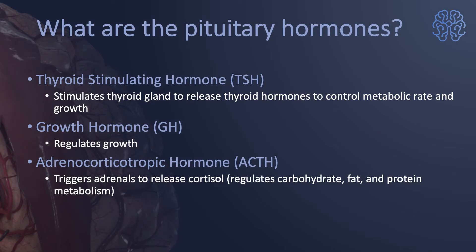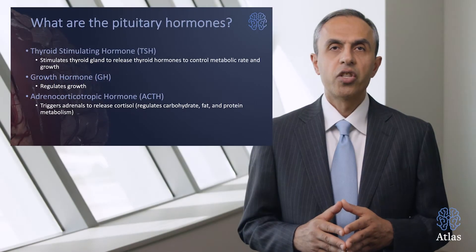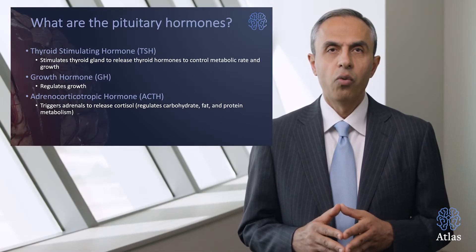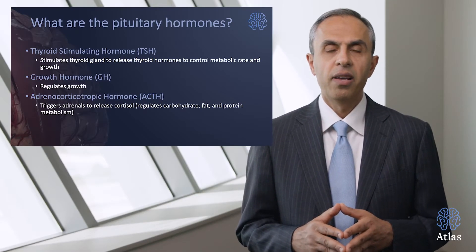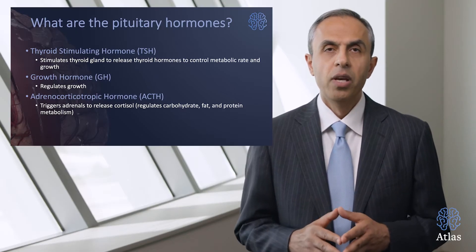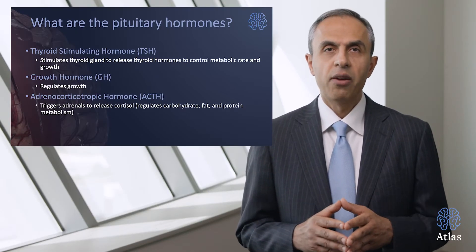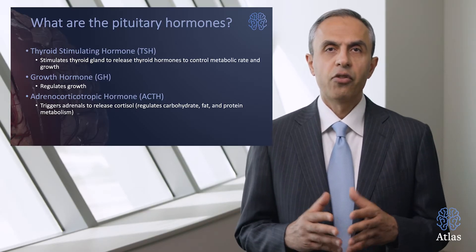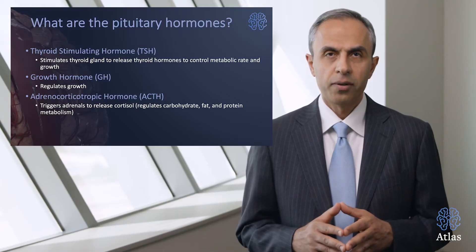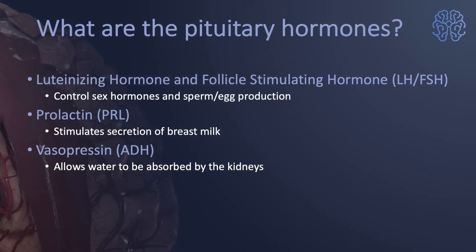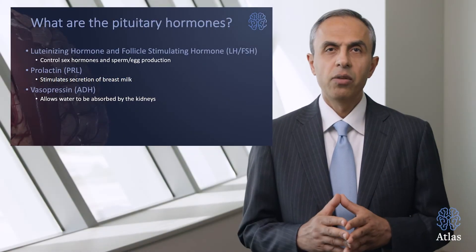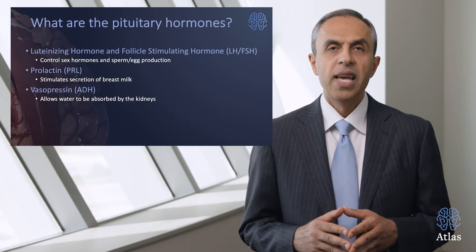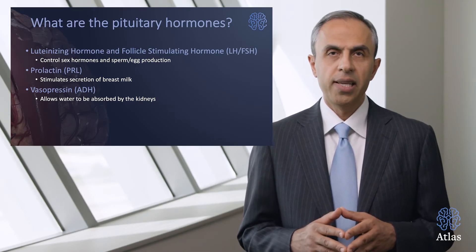What are the hormones produced by the pituitary gland? Number one is the thyroid stimulating hormone, which stimulates the thyroid gland to release thyroid hormones involved in growth and metabolism. Then there is growth hormone that regulates growth, and adrenocorticotropic hormone that triggers the adrenal gland to release cortisol. Luteinizing hormone controls sex hormones and sperm and egg production, prolactin stimulates breast milk secretion, and vasopressin allows water to be absorbed by the kidneys.